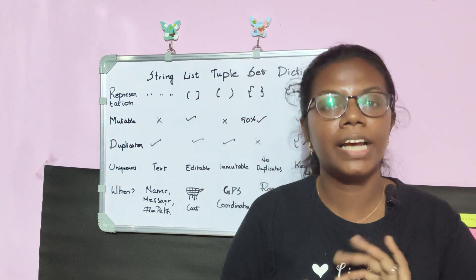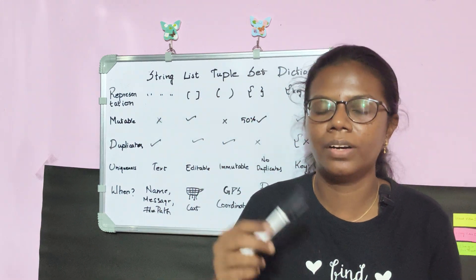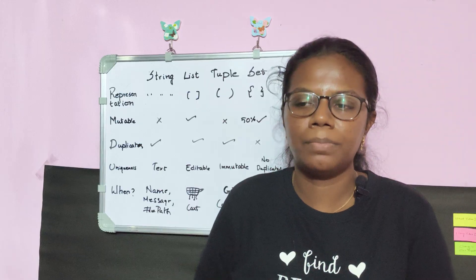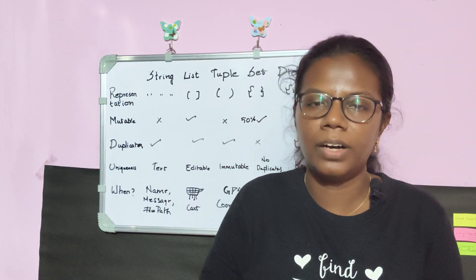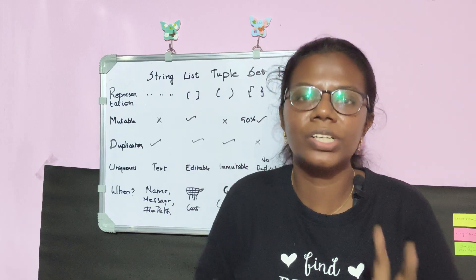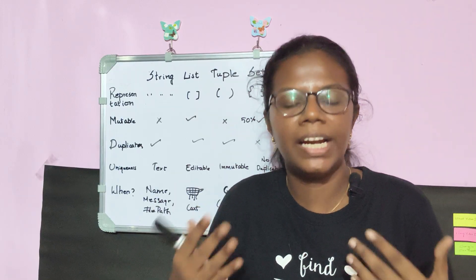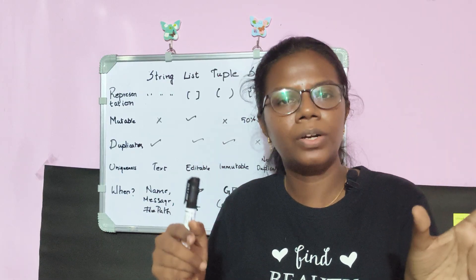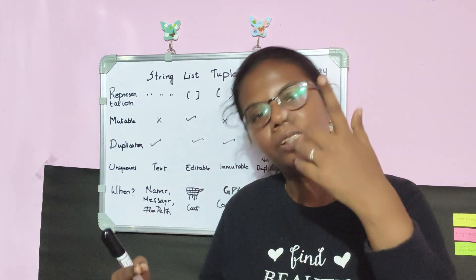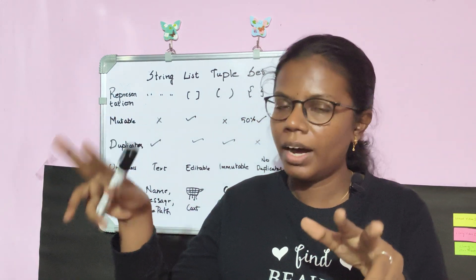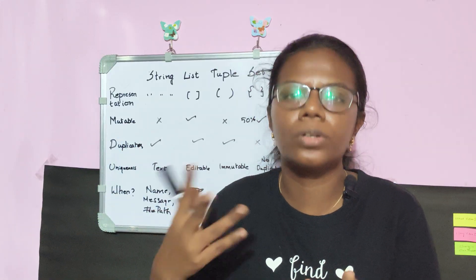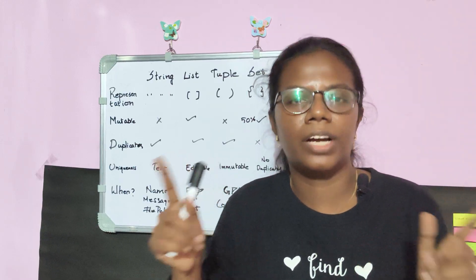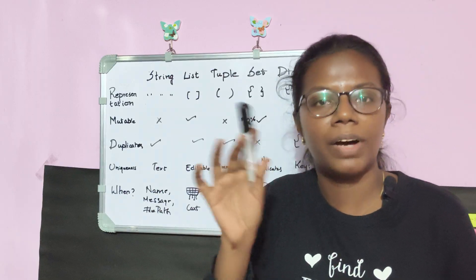First, how does the string data type get represented? If you watched my day one or day two video, you might have clarity on this — especially on day six when I explained how operators work. If I want to create a string in Python, I'll create a variable name, then open double quote or single quote, store my text inside, and close it. Next, list — list data type in Python will be stored inside square brackets.